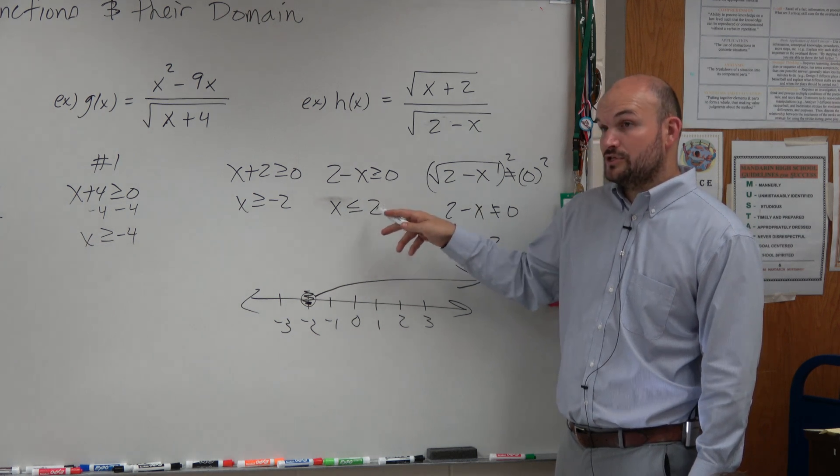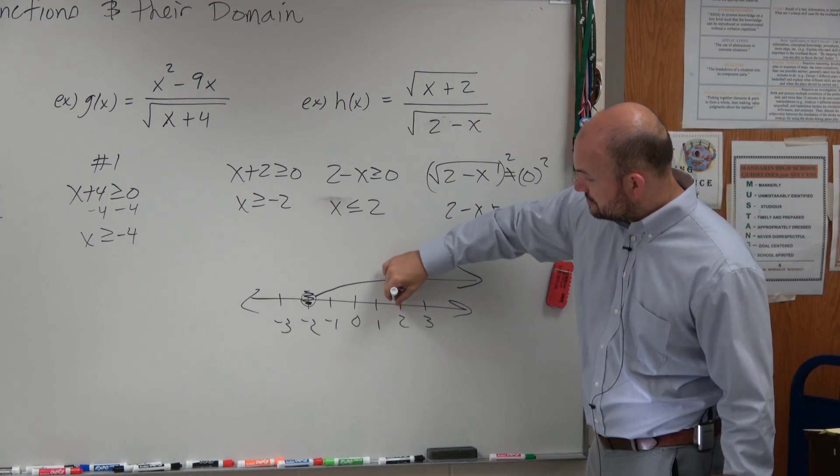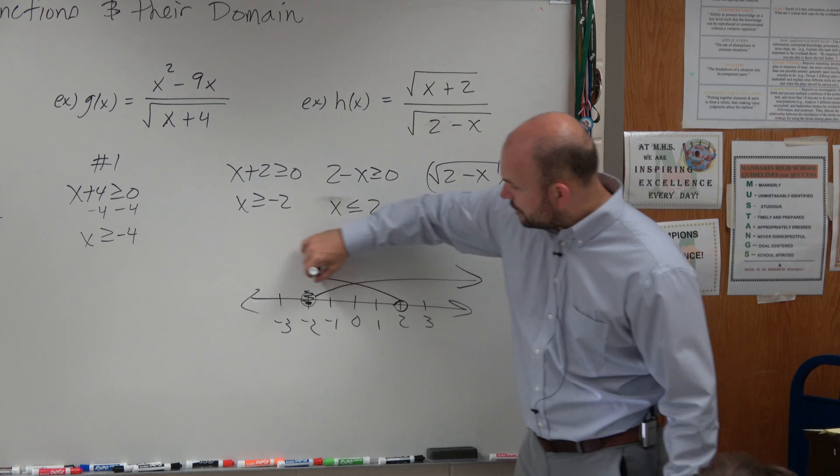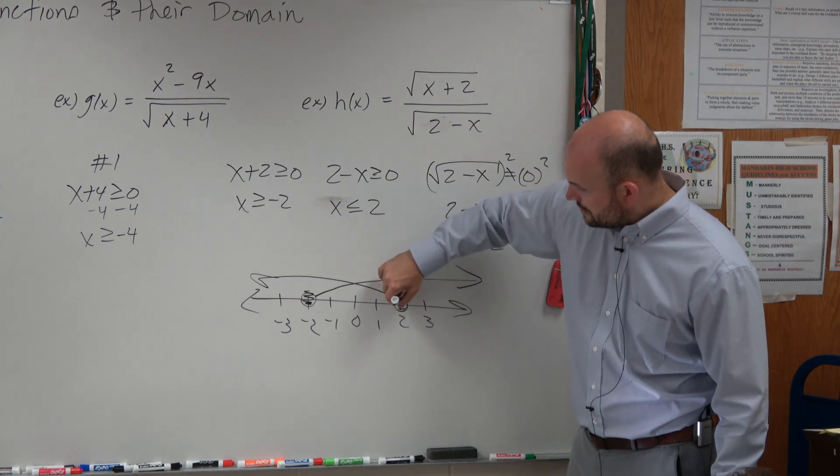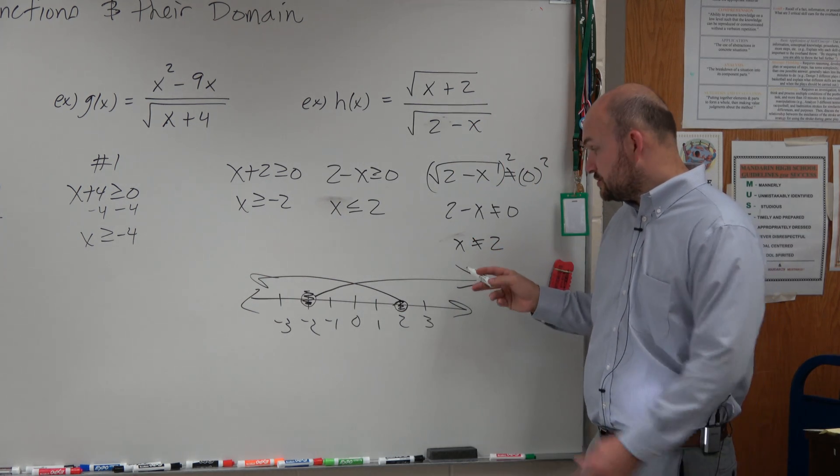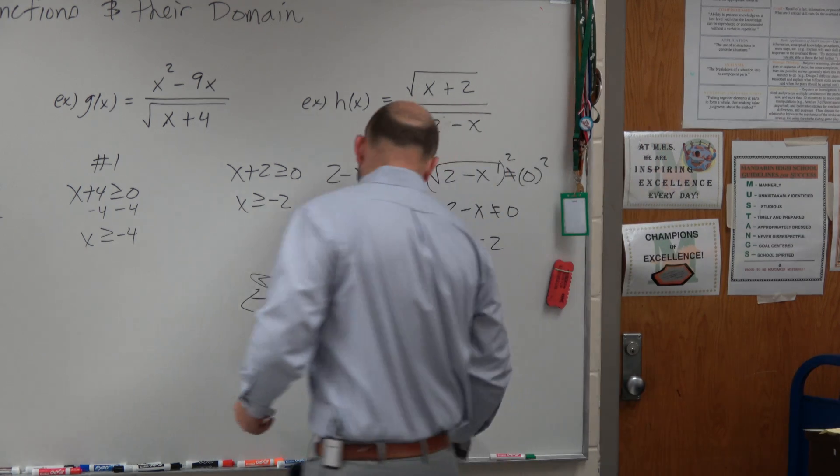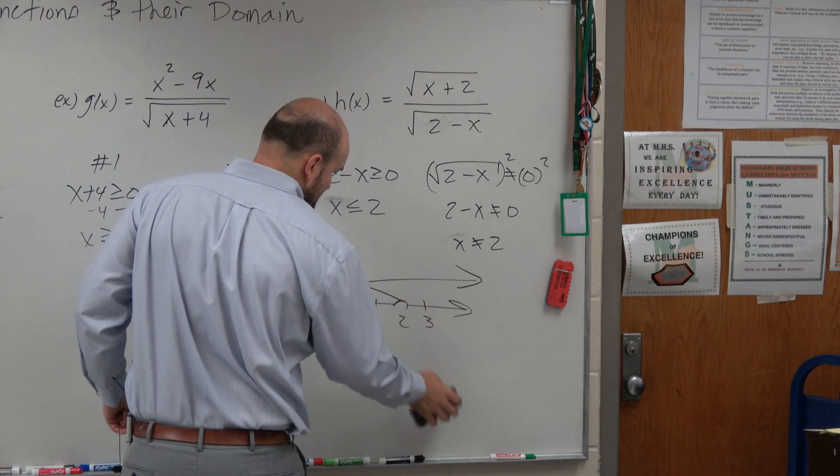Let's do the next one. X is less than or equal to 2. Is 2 included? Yes. X is less than or equal to 2, that's going to all the values over there. However, when I go back to my third constraint, it says x actually cannot equal 2. So I have to redo this as an open circle.